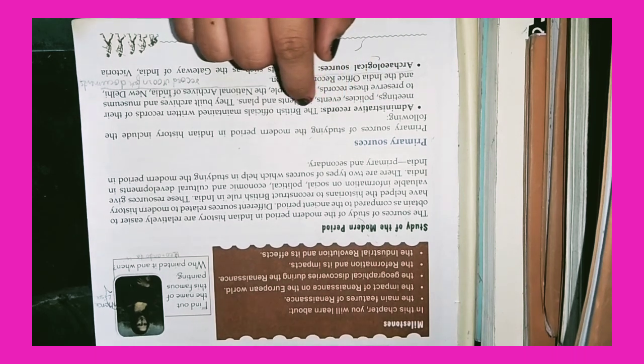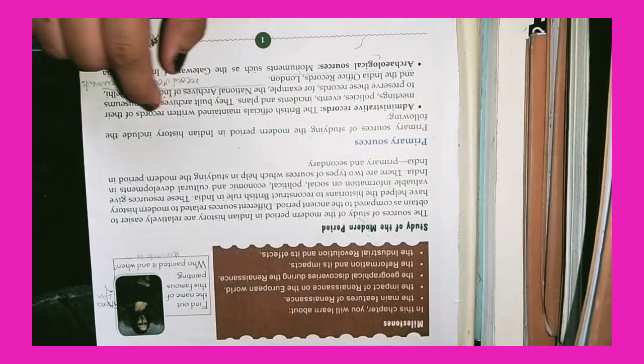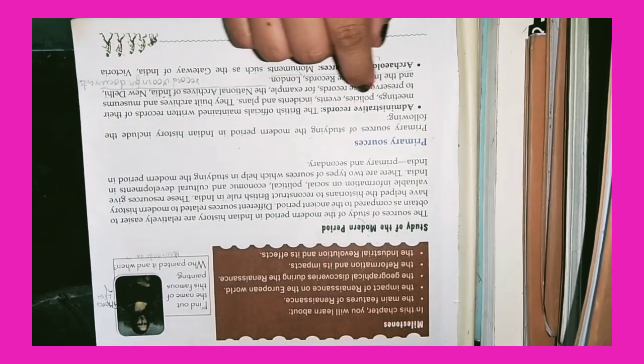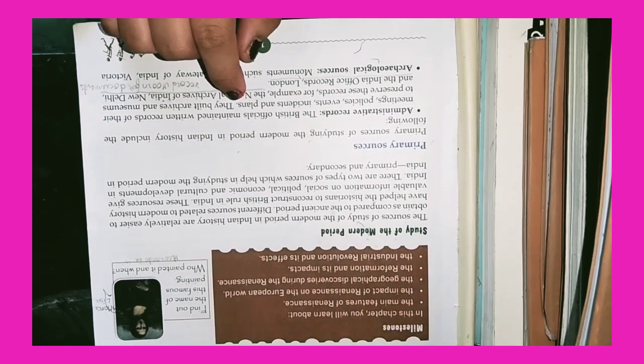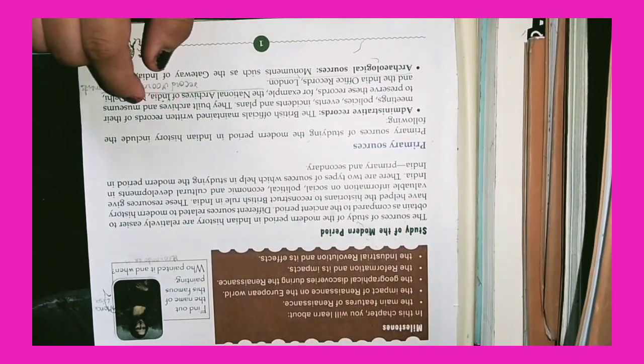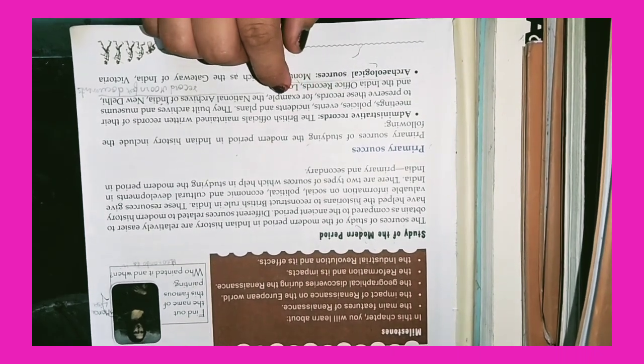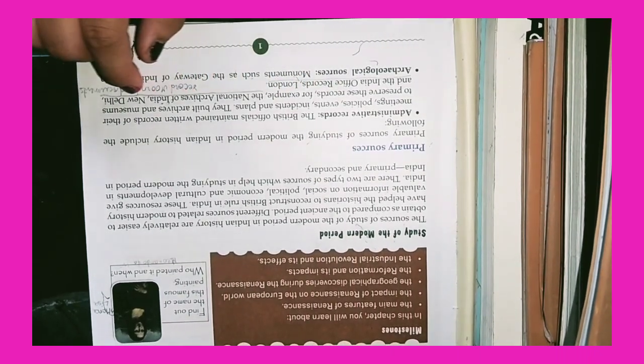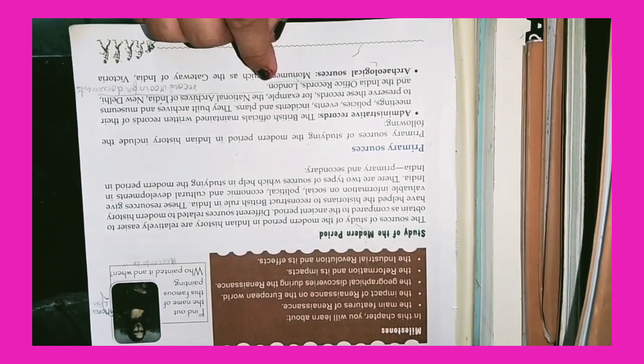Primary Sources. Administrative Records: The British officials maintained written records of their meetings, policies, events, incidents and plans. They built archives and museums to preserve these records, for example, the National Archives of India, New Delhi and the India Office Records, London.